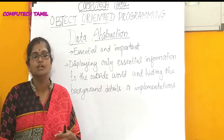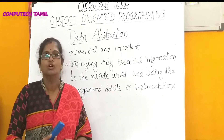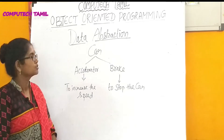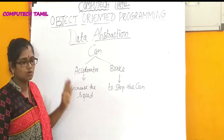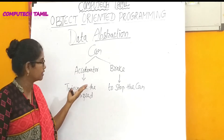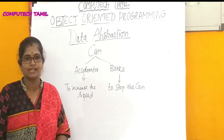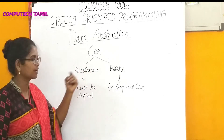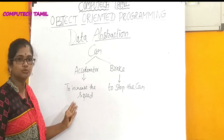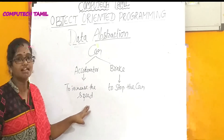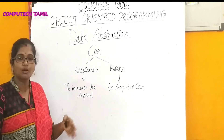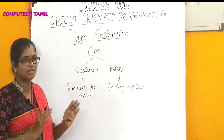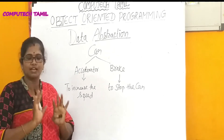Let's talk about a real-time example. In a car, we have the accelerator, brake, and clutch. The accelerator is used to increase the speed of the car. If we press the accelerator, the car will increase its speed. This is something we know from the outside world.